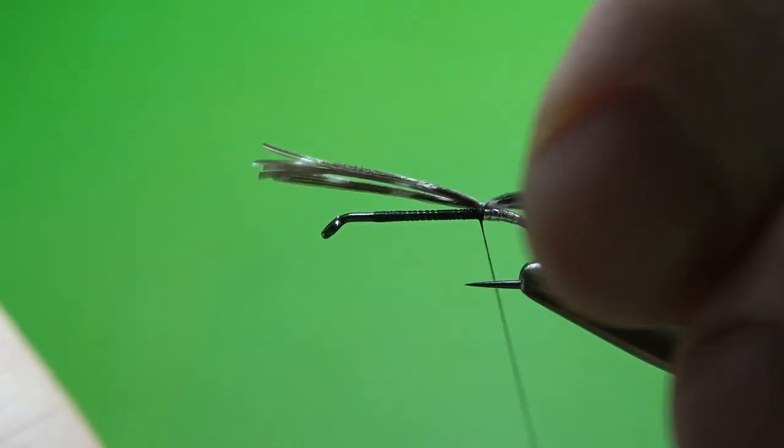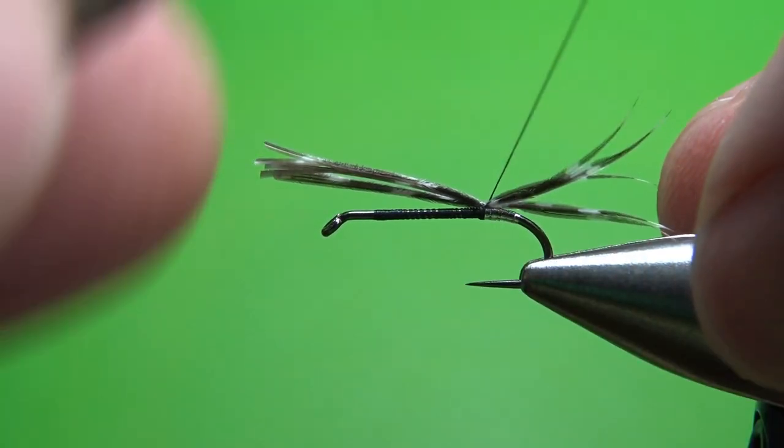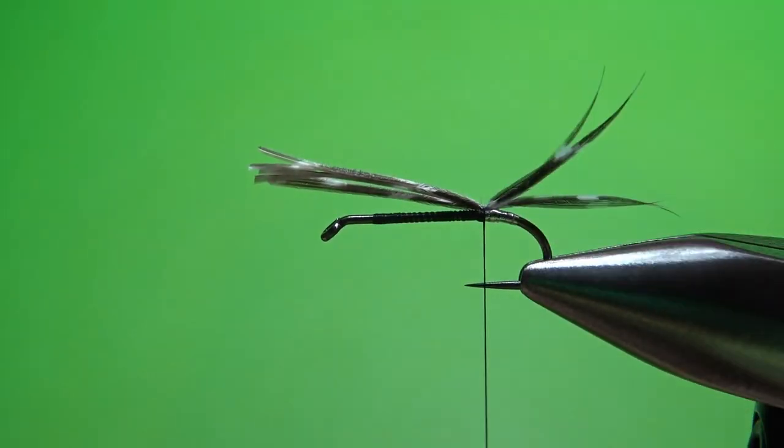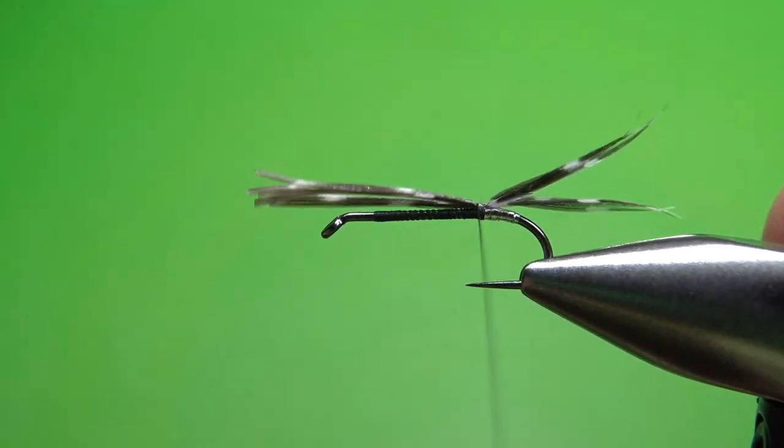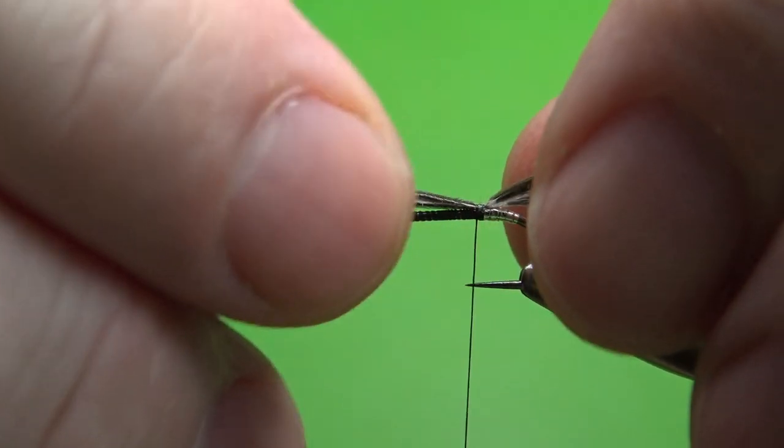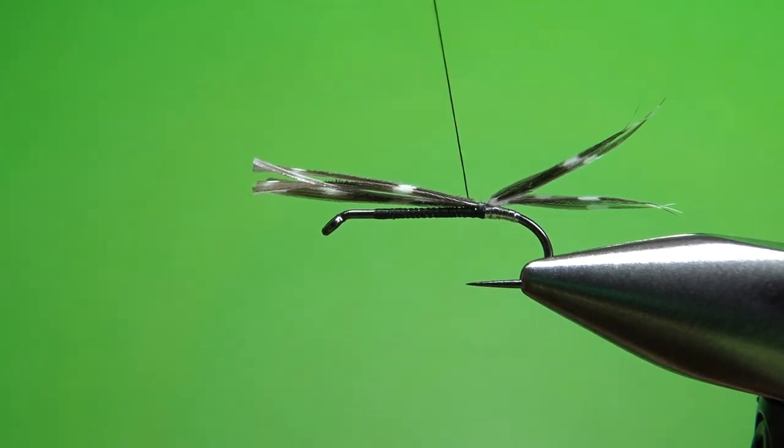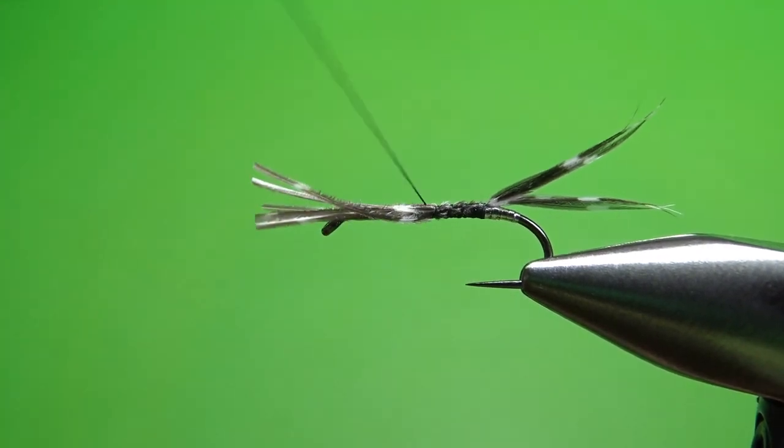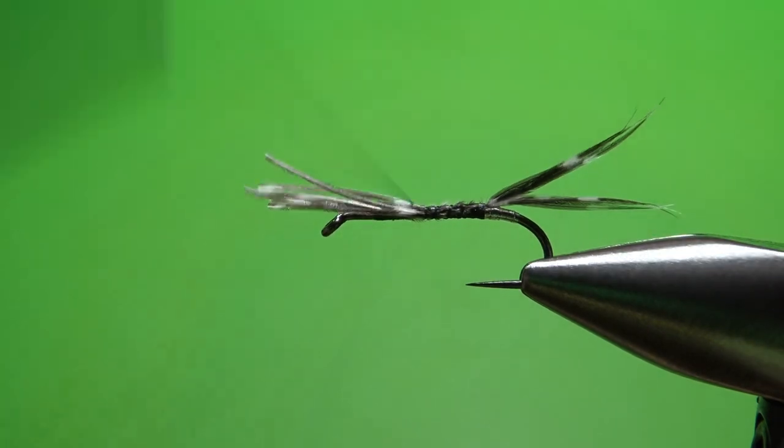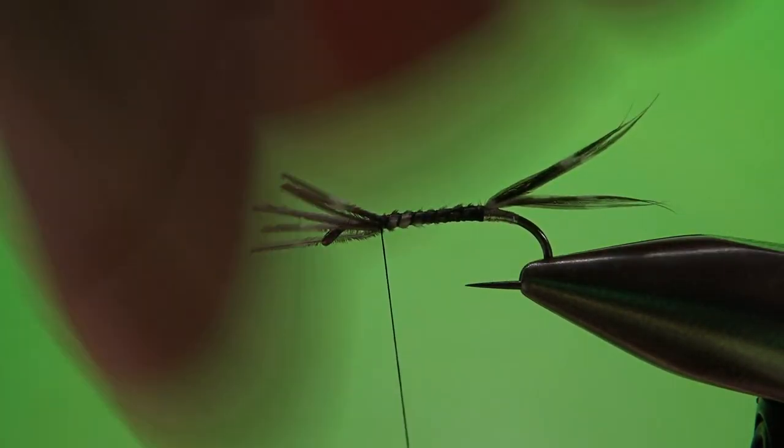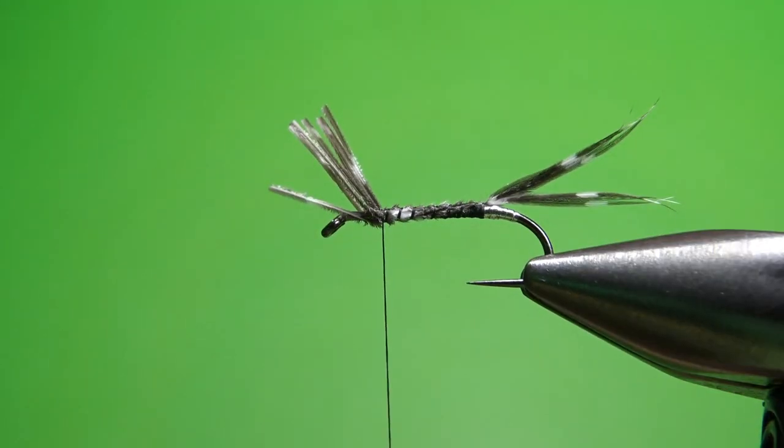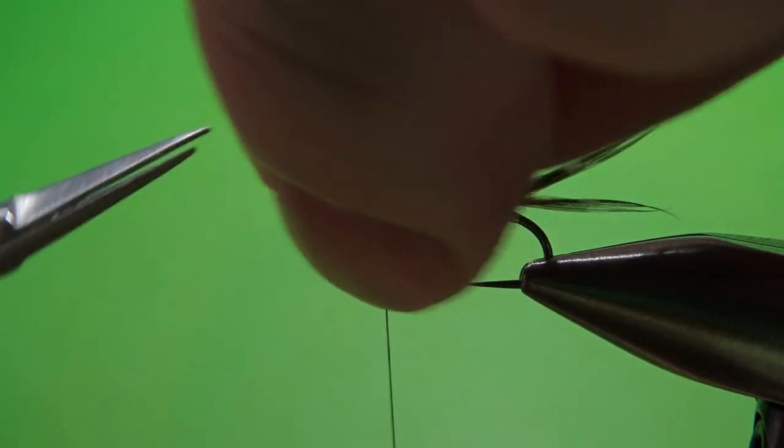We'll put a wrap and then let's see how that's going to look. Get them situated. I think that looks good right there with them pointing up a little bit. Now I'm going to leave this in here. Just take some loose wraps up here. These fibers are going to be my underbody.